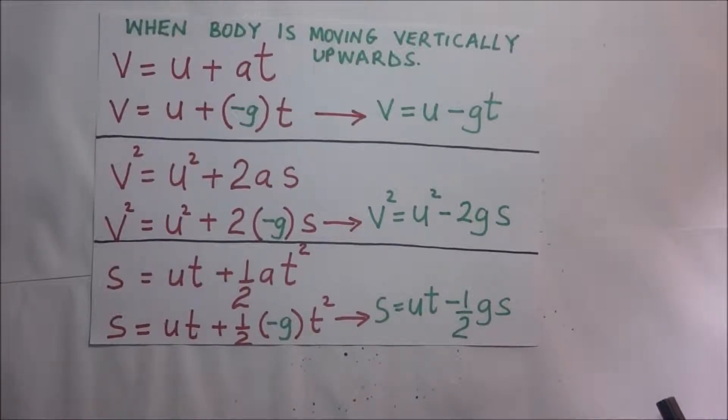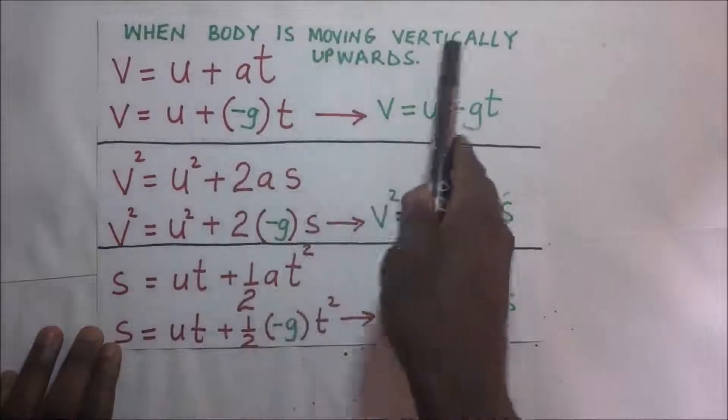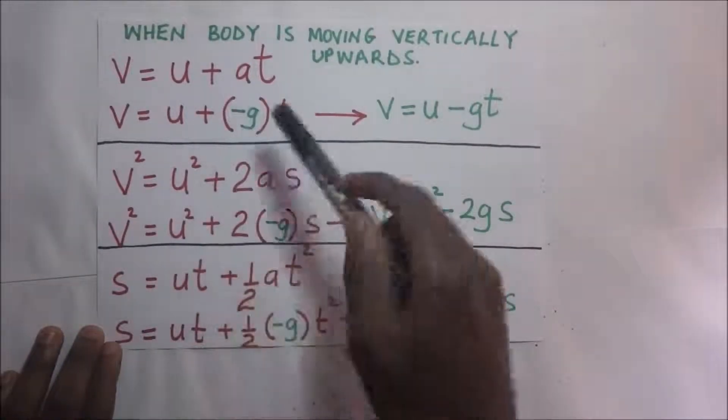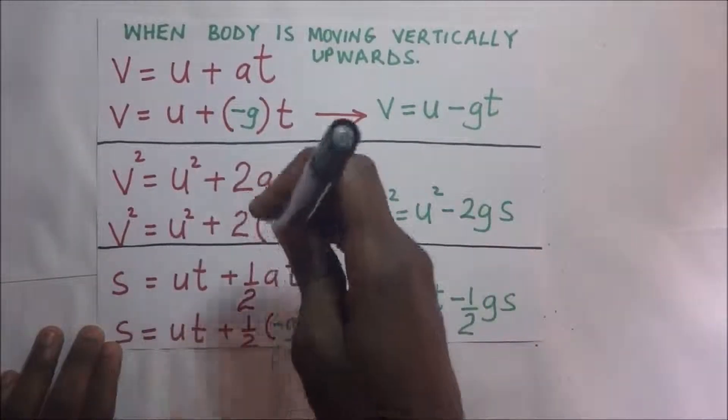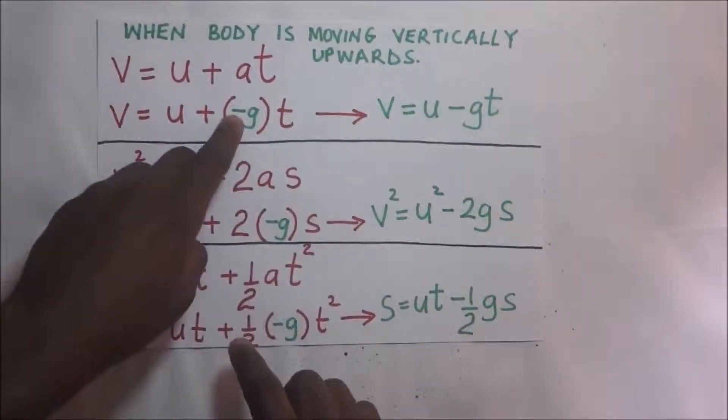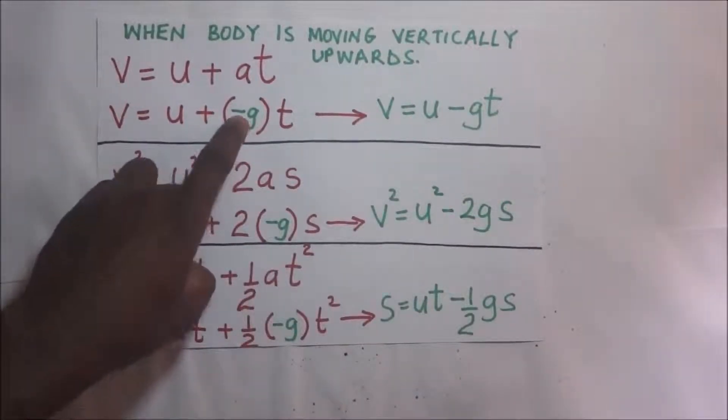That is why as it is moving up, its speed keeps reducing, its velocity keeps reducing. So because its velocity keeps reducing, it means that when you are throwing a body and it is moving vertically upwards away from the earth, its acceleration due to gravity will be negative g.